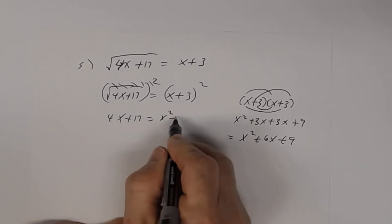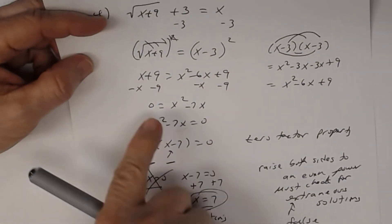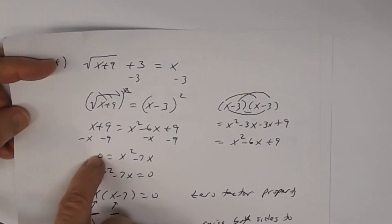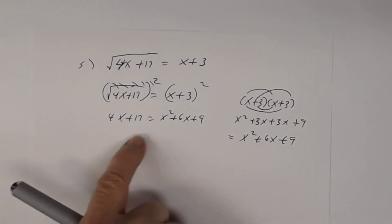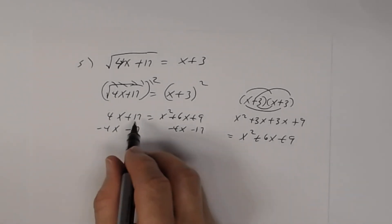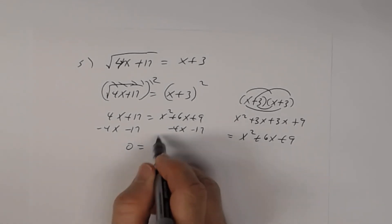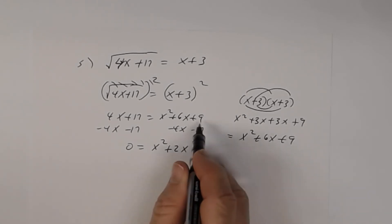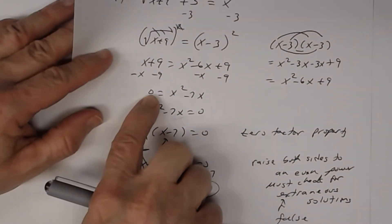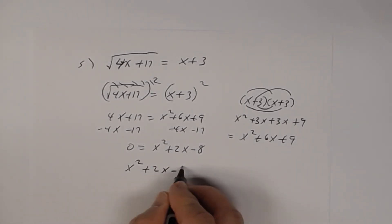Just like in problem 4, we went from a square root equation to a quadratic. Subtract 4x and 17 from both sides: 0 = x² + 2x − 8. Transposing: x² + 2x − 8 = 0. This factors into two binomials — and since the constant is negative, the signs are different.